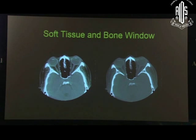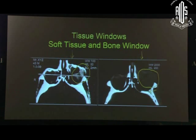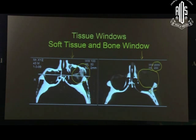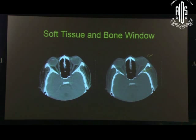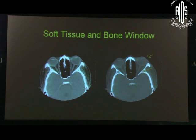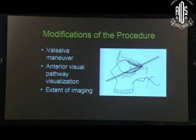To differentiate soft tissue window from bone window further: bone window can be done at different settings. At a very high window width and window level the bone detail is extreme, but at a modest level you can see both soft tissue and bone. You can play around with the settings of the CT scan machine to get optimal resolution. Tell the radiologist exactly what you are looking for and they will deliver it.